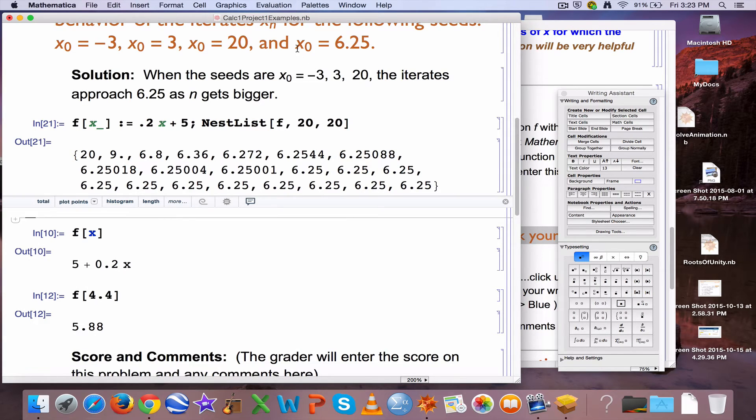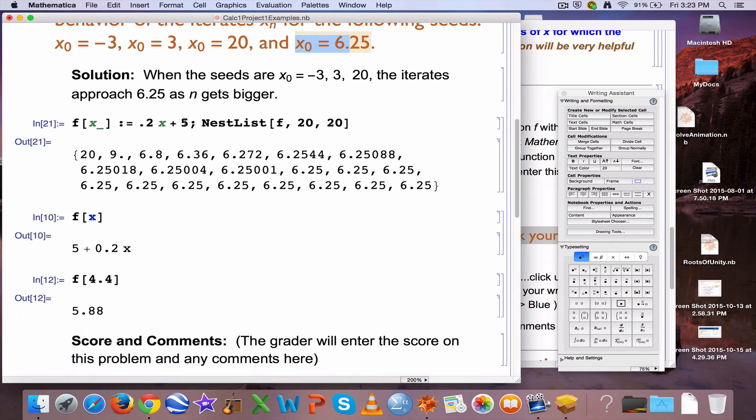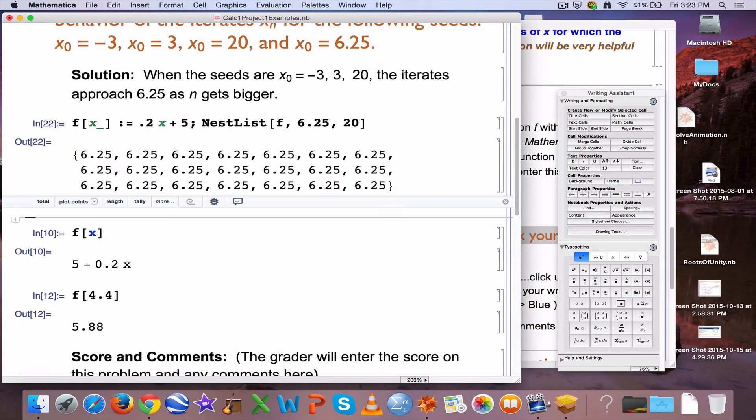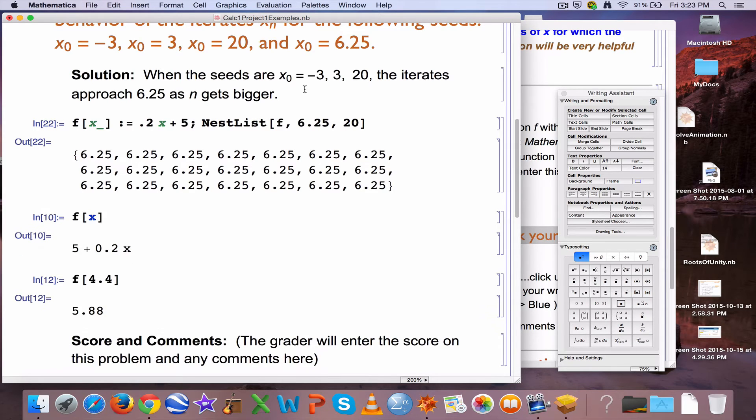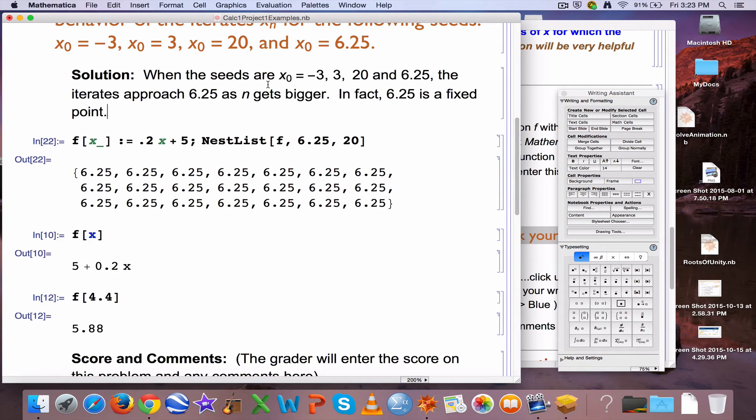How about when the seed is 6.25 exactly? I hope you can guess that it's going to stay at 6.25 all the time. And, that number 6.25 is what's called a fixed point. You can say that, in fact, 6.25 is a fixed point. It stays where it started. That's why we call it a fixed point.